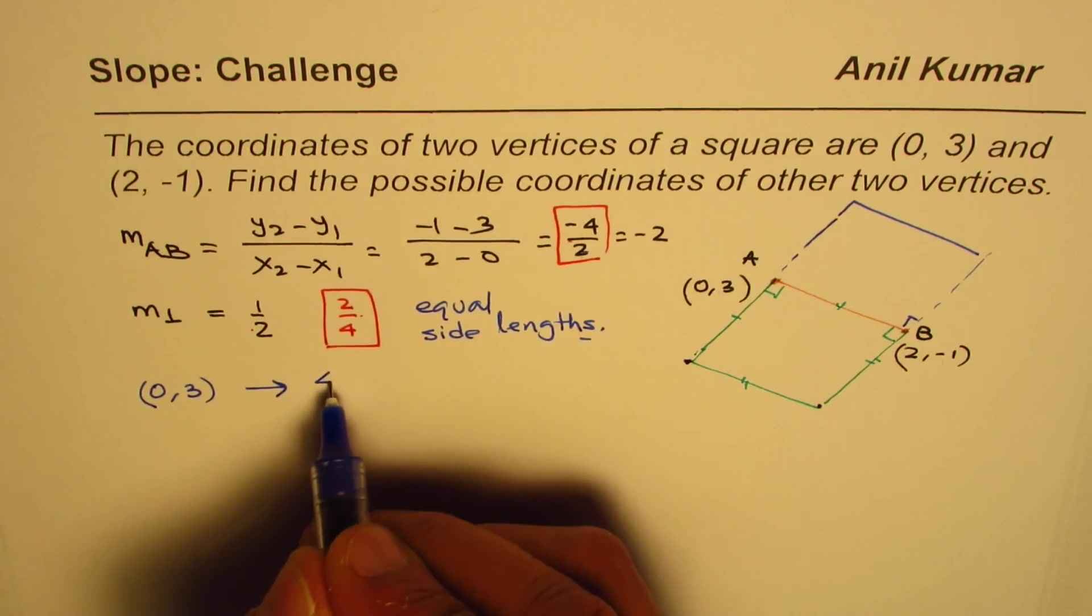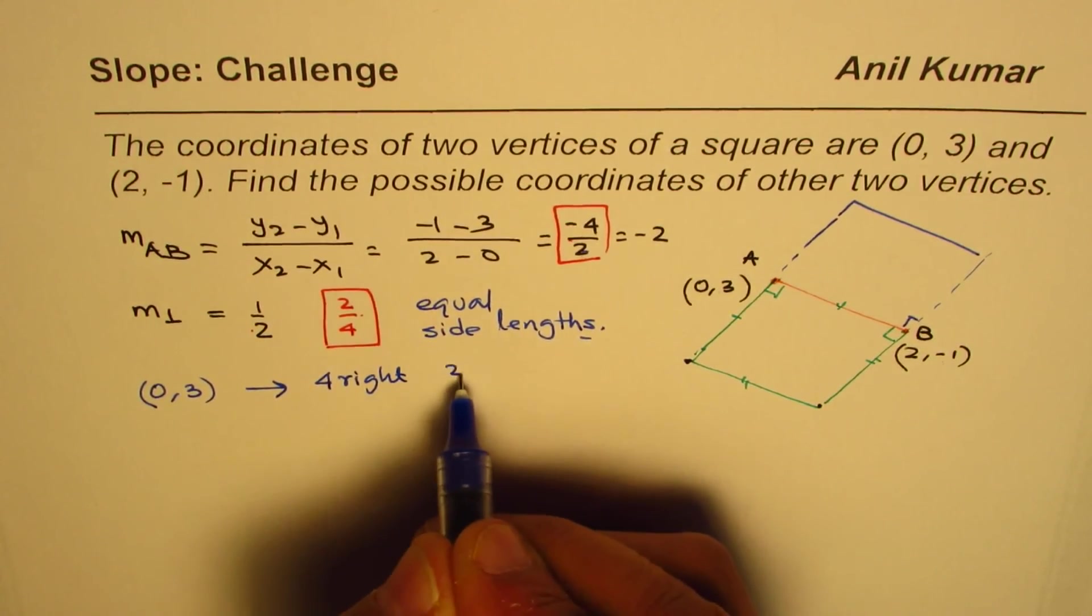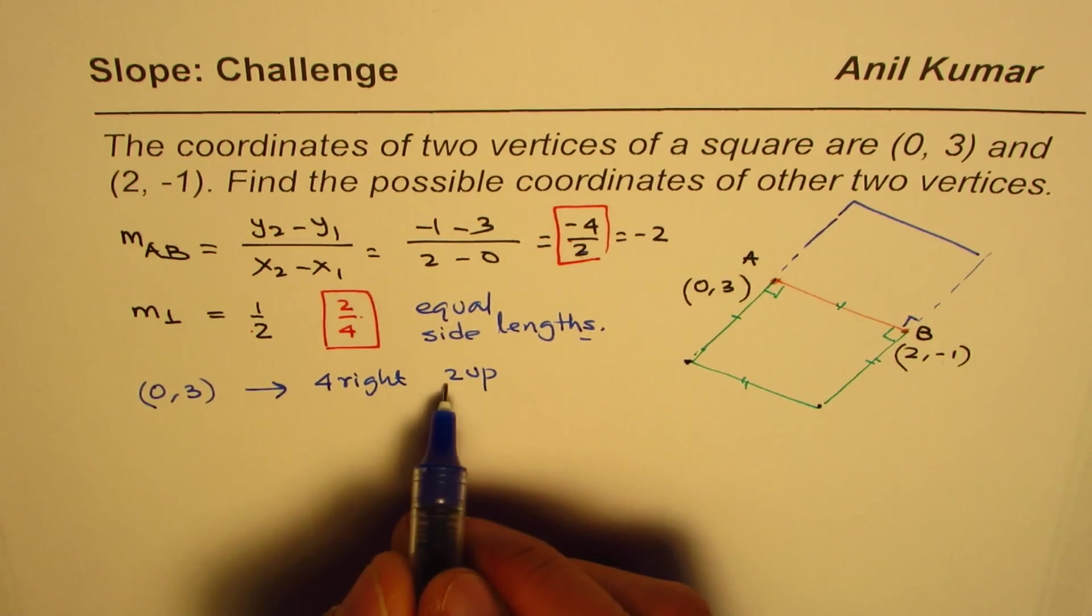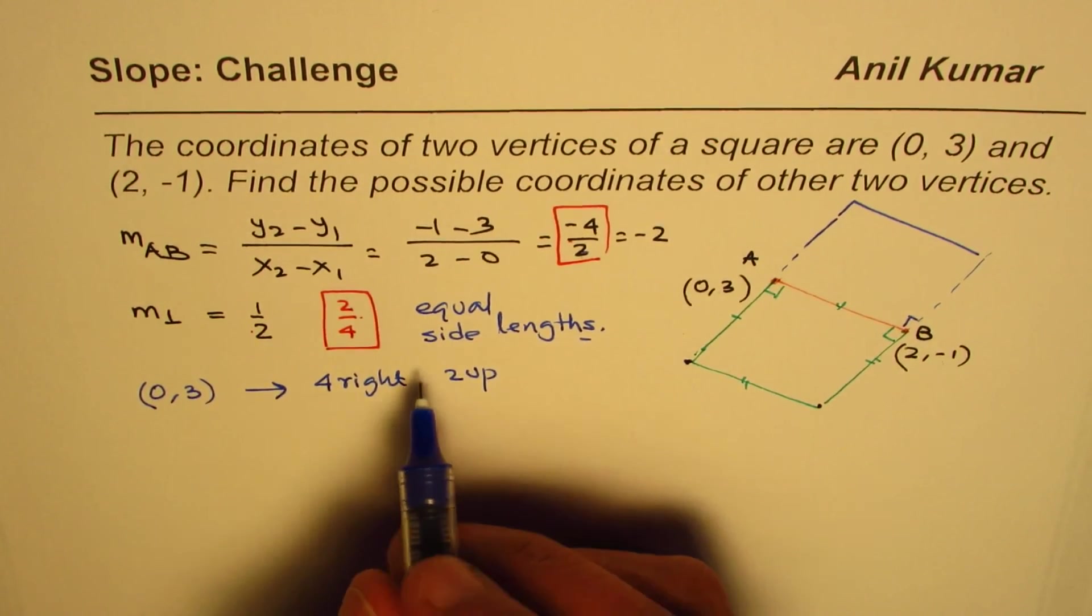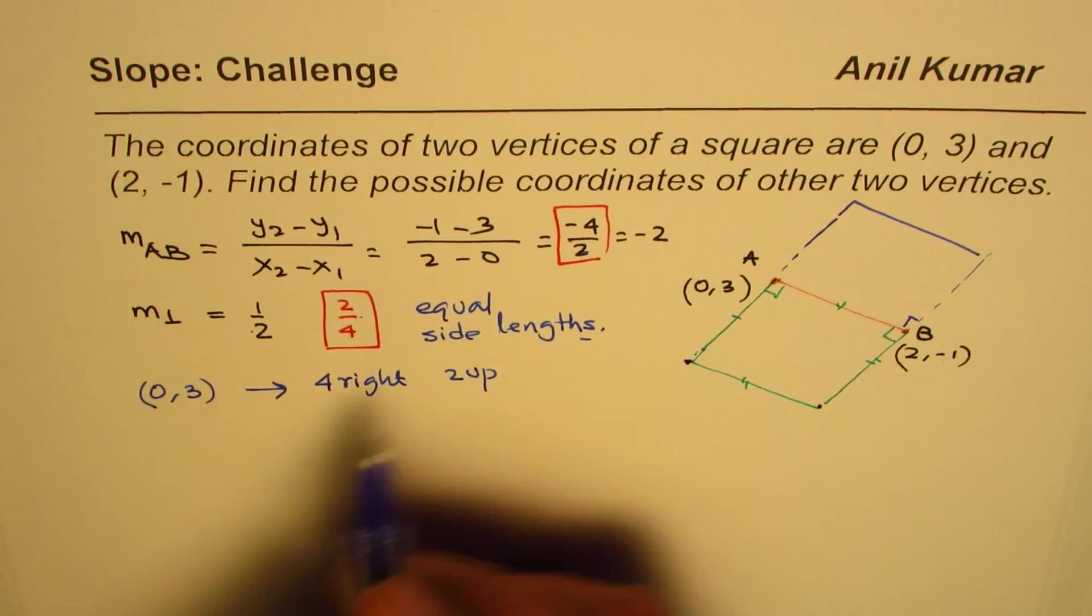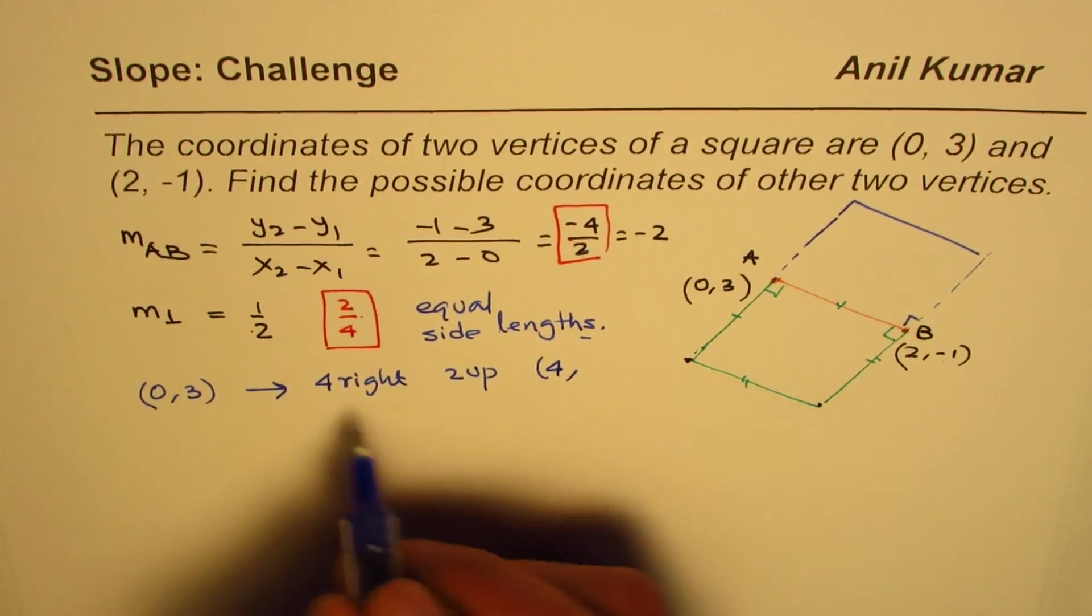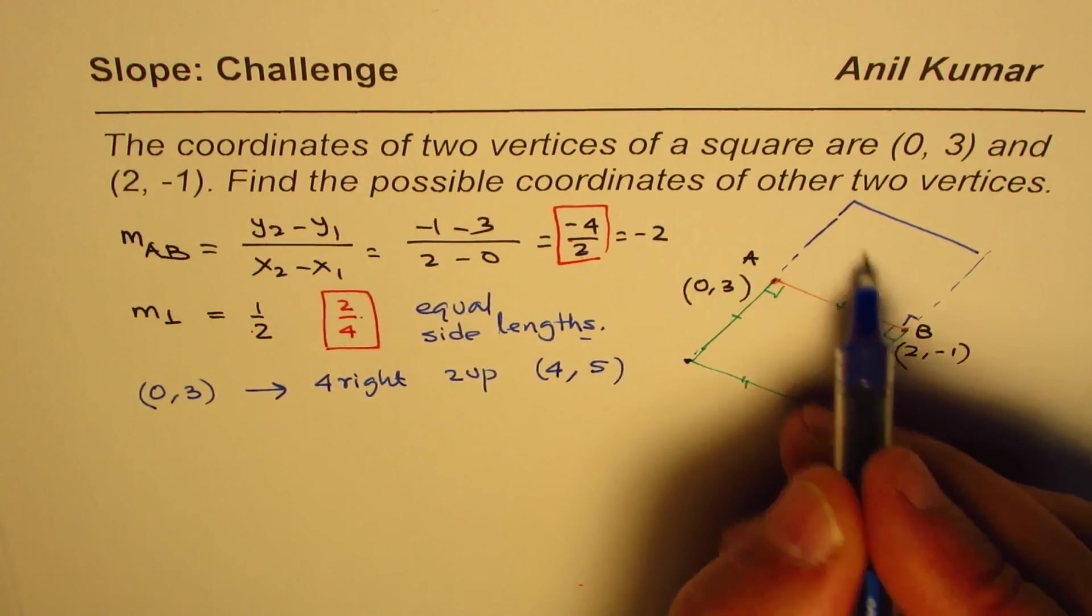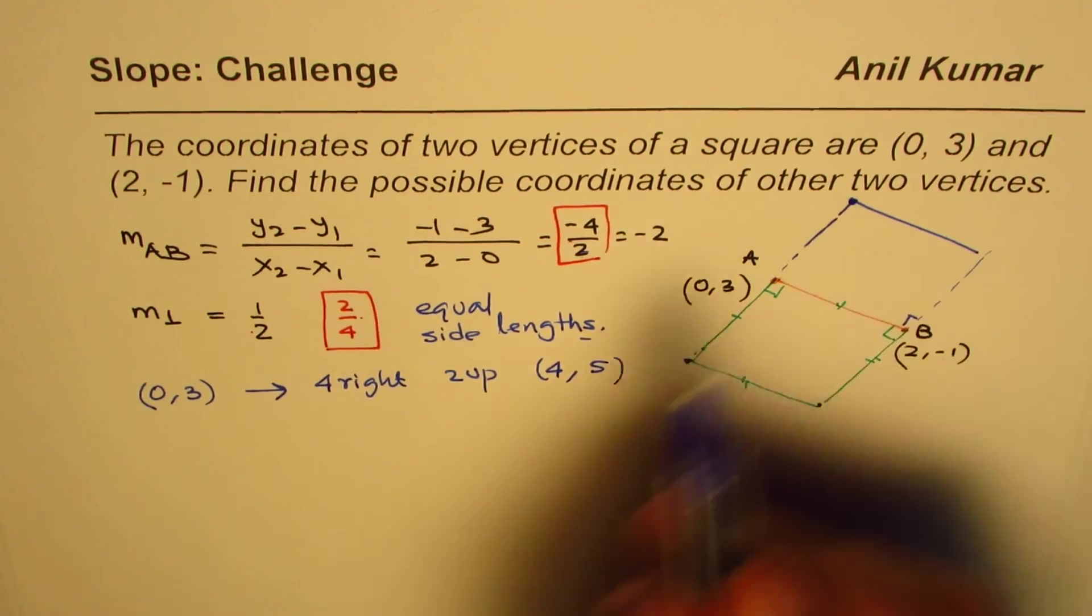If I do 4 right and 2 up from A, then 4 gets added to 0, giving us 4, and 2 gets added to 3, giving us 5. So going 4 right and 2 up from A, we reach the point (4, 5).